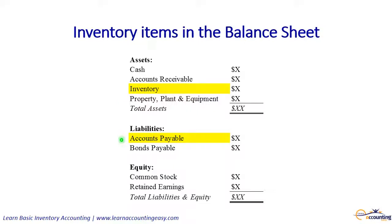Also, when we purchased inventory and asked the supplier to just send us a bill — because we didn't want to pay cash right at purchase — all those liabilities are recorded in accounts payable. These are the main areas in the balance sheet where inventory-related items are going to show up.